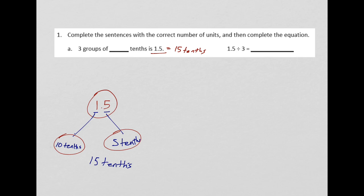15 tenths, well, 3 groups of blank tenths is 1.5. So, what I'm going to do over here is I'm going to say that 1.5 equals 15 tenths. So, how many groups, 3 groups of how many tenths would make 15 tenths? Well, let's imagine it was a whole number. So, 3 groups of something means 3 times something, and we know the something here is going to be expressed as tenths, equals 15 tenths.